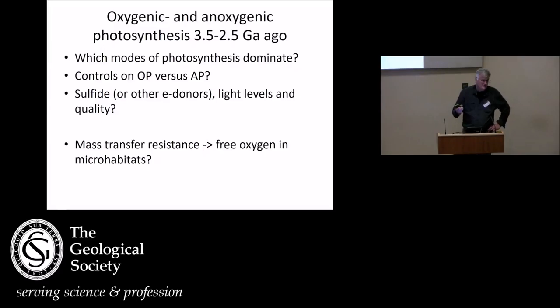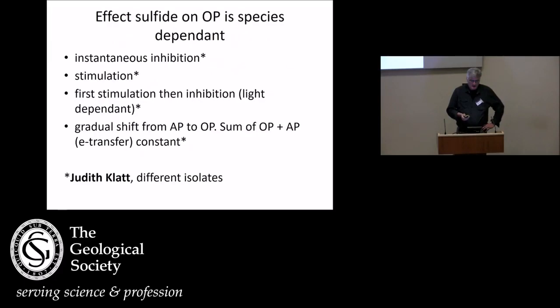So which of the modes dominate in a reduced environment? What controls oxygenic versus anoxygenic photosynthesis? And also of interest in the case of microbial mats, an important aspect is that there is mass transfer resistance. And can there be microhabitats developing that are unoxygenated in an oxygen-free environment?